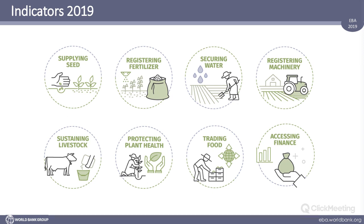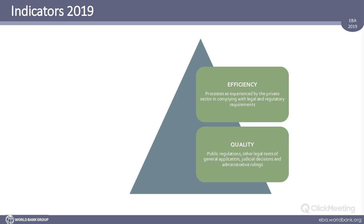Within each of these indicators we look at two aspects of the regulatory framework. Primarily we look at the quality of the regulations — a reading and assessment of the laws, regulations, norms, and provisions found in a country's documents. This is what the EBA was founded on and forms the bulk of the information we provide. But we also look at a second dimension: what actually happens in practice, which we call efficiency indicators. Not necessarily what's in the books is what takes place in practice, and this area is more complex to capture.